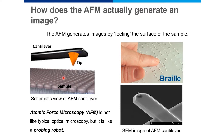This AFM tip actually feels the sample surface and generates an image — very much similar to how a visually impaired person feels Braille writing on paper. That is the analogy. The bottom-right image is of an actual AFM tip and cantilever. If you were to measure the radius of this AFM tip, it would be just a few nanometers or tens of nanometers. AFM is not like a typical optical microscope — it is more like a probing robot that feels the sample surface to give you an image.